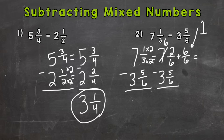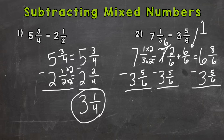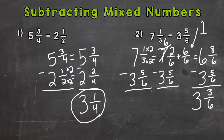So now we have 6 wholes, and then 2 plus 6 is 8, keeping a denominator of 6. Subtract 3 and 5/6. Now we can do 8 minus 5 is 3, keep the denominator of 6. And then 6 minus 3 is 3. Check to see if we can simplify the fractional part — and we can. A common factor between 3 and 6 is 3, so divide by 3 to get the fraction in lowest terms. This turns out to be 3 and 1/2, which is our final answer.